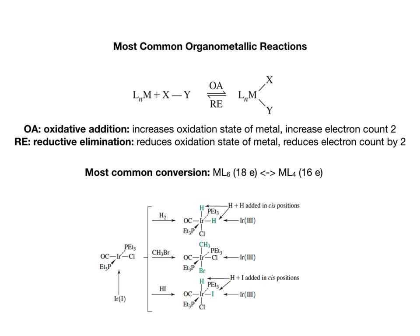Reductive elimination is the reverse process: two ligands on the metal break away and form a covalent bond between themselves. Formally, you can view this as a decrease of two X-type ligands. In terms of electron counting, the most likely conversion is an 18-electron complex, typically an ML6-type complex, undergoing reductive elimination to produce an ML4 complex that has 16 electrons.